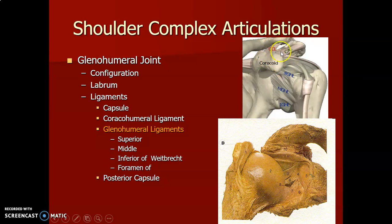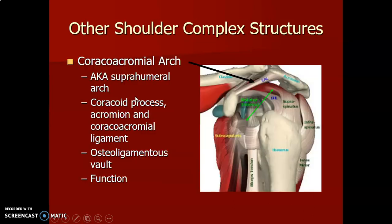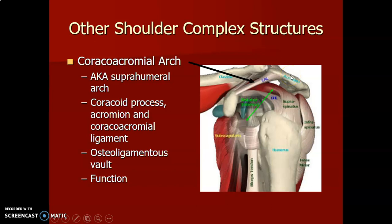The scapulothoracic joint is not really a joint in the traditional sense — it's a physiological joint, not a true articulation between two bones. It involves the scapula and muscle. The coracoacromial arc, also called the suprahumeral arc, runs from the coracoid process to the acromial process of the clavicle. It is an osteoligamental structure that stabilizes and protects the joints superiorly.